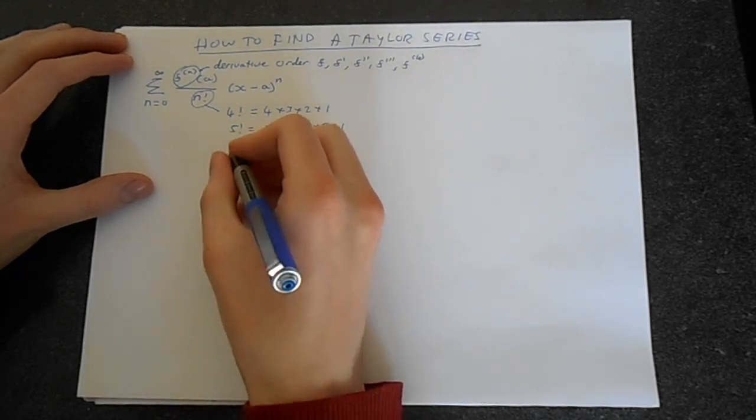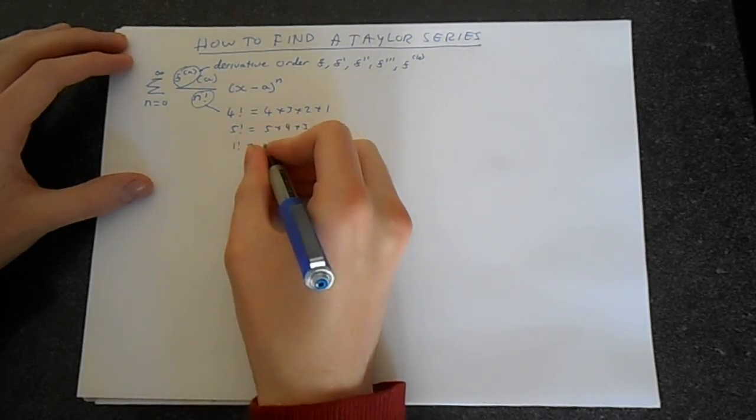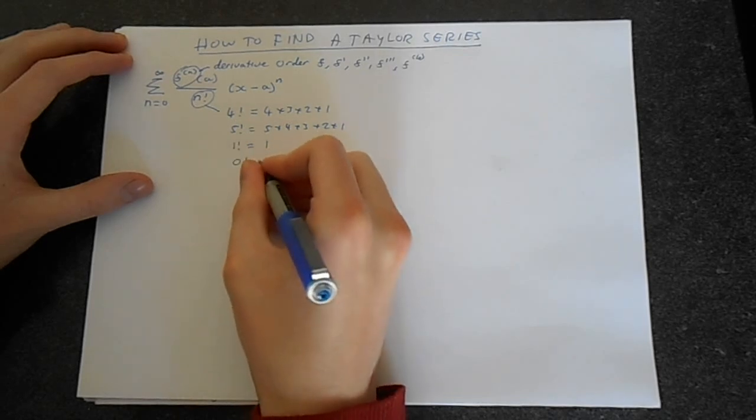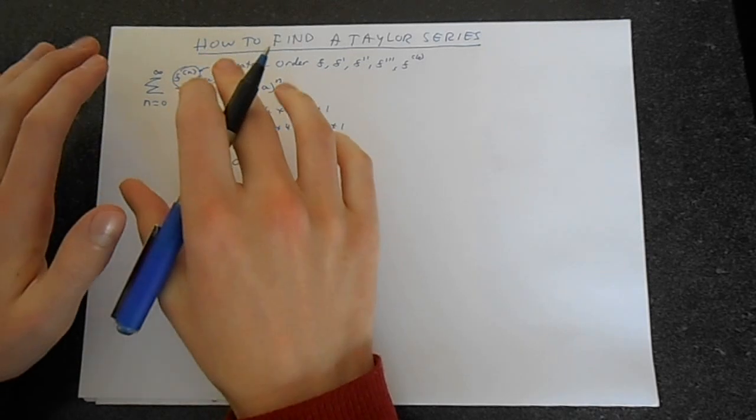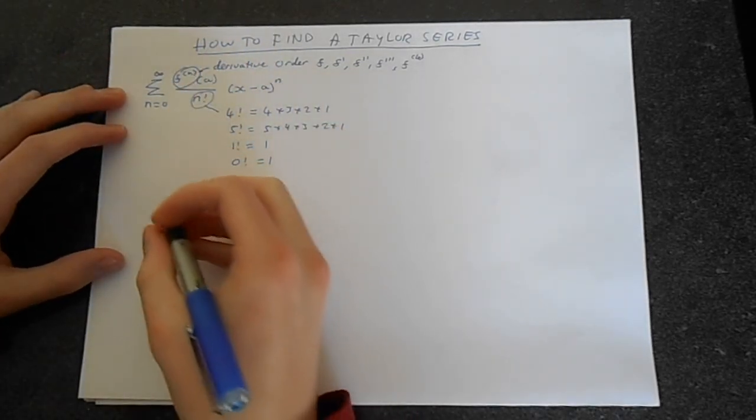There are some special cases. For example, 1 factorial is 1, and 0 factorial is also 1. So that's factorials. Let's expand this and see what we get.